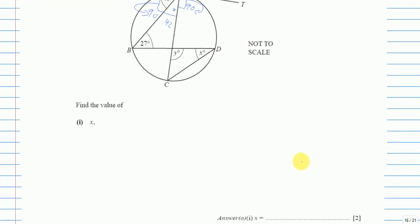So we got the first two marks. This angle is 42 degrees. You can write: 90 minus 48 equals 42 degrees.